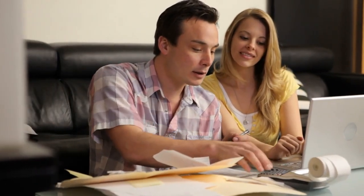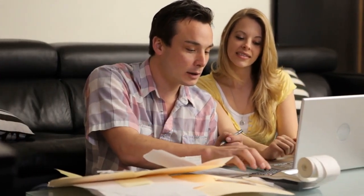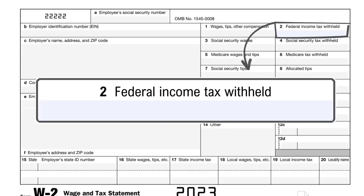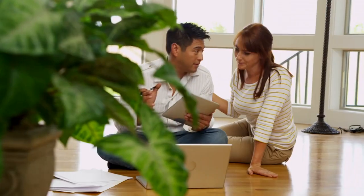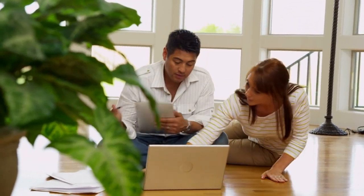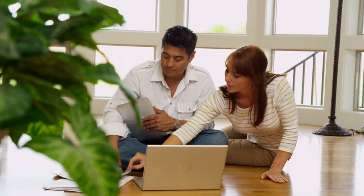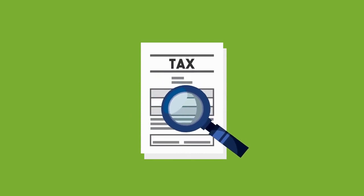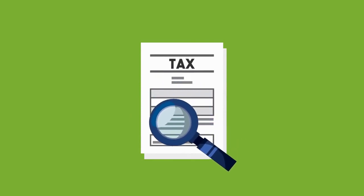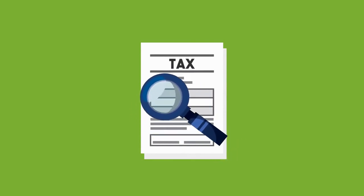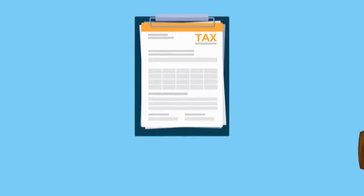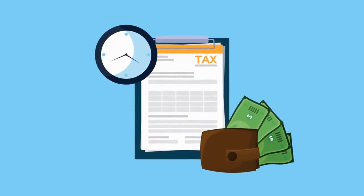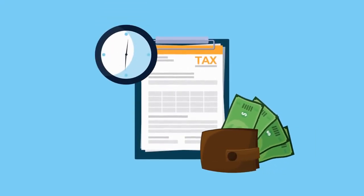For example, let's say your box 1 shows $40,000 — that's your total taxable income from this job. Then look at box 2. If it shows $5,000, that's how much federal tax you've already paid. When you file your taxes, you need to know how much you made and how much tax you've already paid. This helps determine if you owe more taxes or if you can expect a refund.